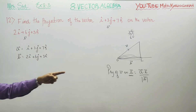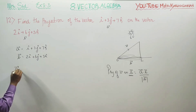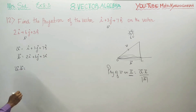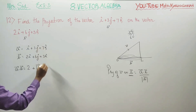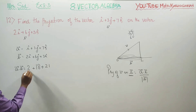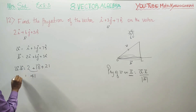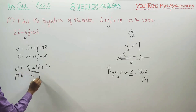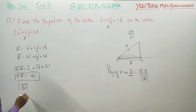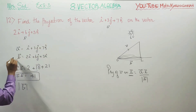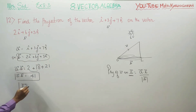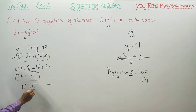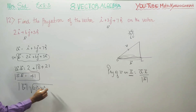For this, you have to find A dot B. Computing A·B: the result is 41. So A dot B equals 41. After finding A dot B, we need to find the magnitude of B vector.